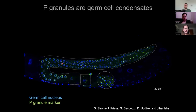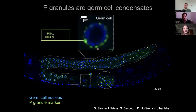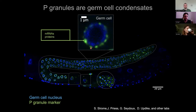P. granules — and this is work from many labs over the last decades — are expressed along germ cell differentiation. They display a beautiful perinuclear localization, usually sitting in the cytoplasmic part of the nuclear pores. They are enriched in polyadenylated mRNAs and proteins, and their formation depends on very active cellular processes, such as RNA helicases and active RNA transcription, highlighting the central role of RNA in their formation and their highly dynamic nature.